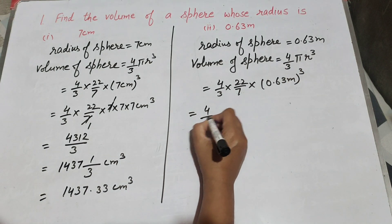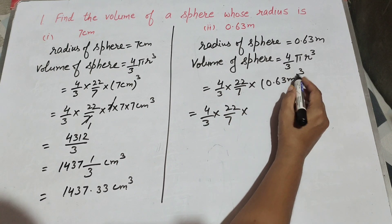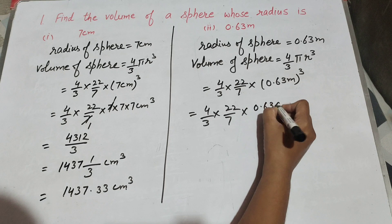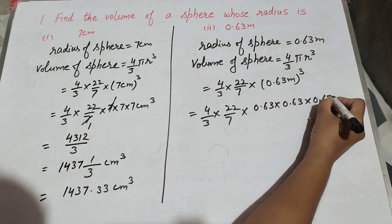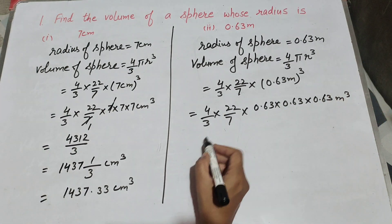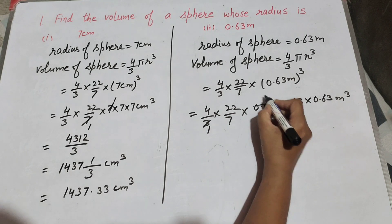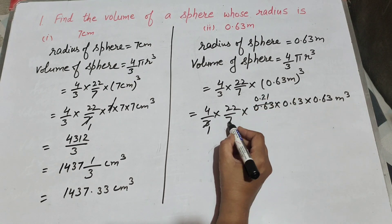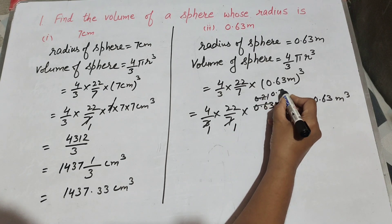So it is equal to 4 over 3 times 22 over 7 times 0.63 meter cube. Now 3 and 0.63 both are cancelled on the table of 3, giving 0.21. Now 7 and 0.21 both are divisible on the table of 7, and we get 0.03.